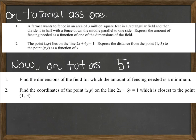Problem number 2 comes with this geometrical situation. The point x,y lies on the line 2x plus 6y equal to 1. I have to express the distance from that point to the point 1, minus 3. And in assignment number 5 the objective was to find the coordinates of the point x,y such that this point is closest to the point 1, minus 3.